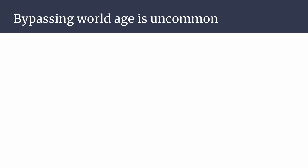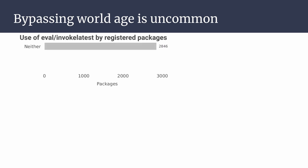However, based on our corpus analysis, bypassing world age is relatively uncommon in practice. We statically analyzed all registered Julia packages, about 4,000, and found that more than two-thirds of the packages use neither eval nor invokeLatest in any capacity. Only a few use invokeLatest, and although about one-third of the packages do use eval, this happens for various reasons.